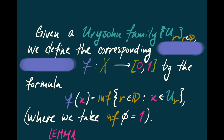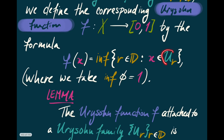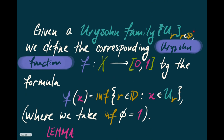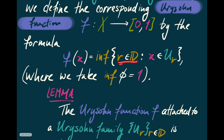Given a Urysohn family U_R, I'll define the corresponding Urysohn function, a function from X to the closed interval from 0 to 1. For a point x of X, I look at all the U_R's that contain x and take the infimum of those R's. This will be a number between 0 and 1, possibly including 0 or 1. I'll now show that this function — which is well-defined on all of X — is actually continuous. The presence of a family indexed by dyadic rationals is sufficient, since I can take the infimum over all indices such that x is contained in U of that index.